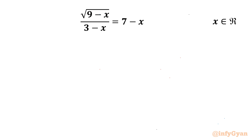Welcome to Infigyan friends. In this video we are going to take up another challenging question from Radical Equations. It is square root of (9 minus x) over (3 minus x) equal to 7 minus x, and we have to find real solutions only.